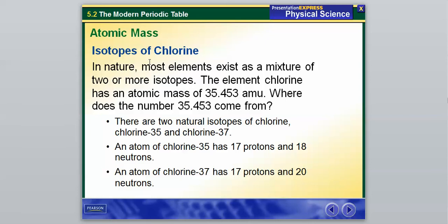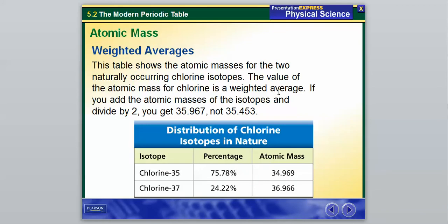And where does that number come from? So the two natural isotopes of chlorine are chlorine-35 and chlorine-37. So an atom of chlorine-35 has 17 protons and 18 neutrons, which we expect because 17 plus 18 is 35. And an atom of chlorine-37 has 17 protons and 20 neutrons. So that's pretty simple. So that is our two naturally occurring isotopes of chlorine. But if you're going to notice, why don't we have a more even number?